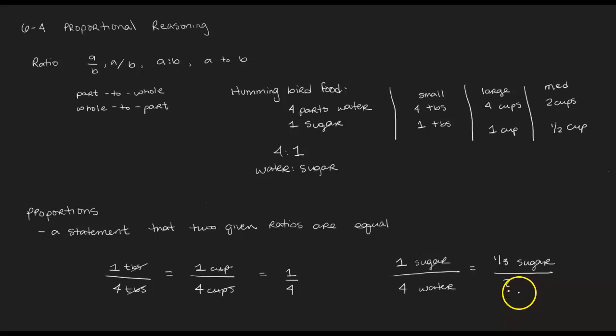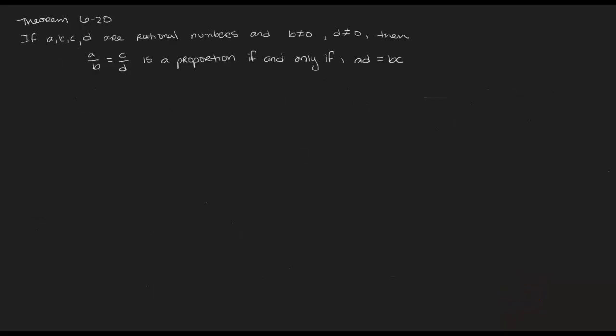Theorem 6-20 in this section starts by saying A, B, C, D are each rational numbers, so they could be completely different numbers but they're all rational. We need to make sure that B is nonzero and D also needs to be nonzero. Then we can write the proportion A over B is equal to C over D if and only if the product A times D is equal to B times C.